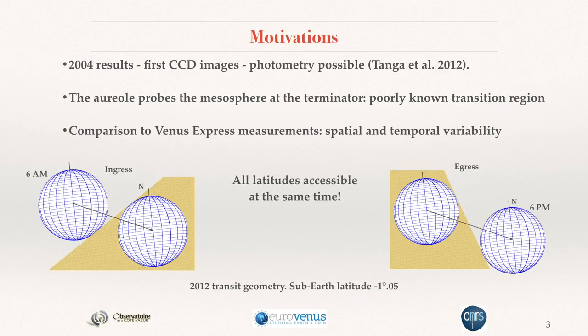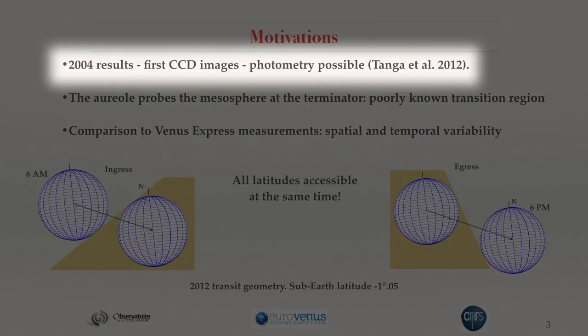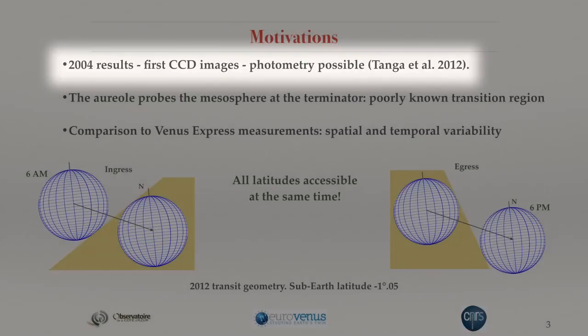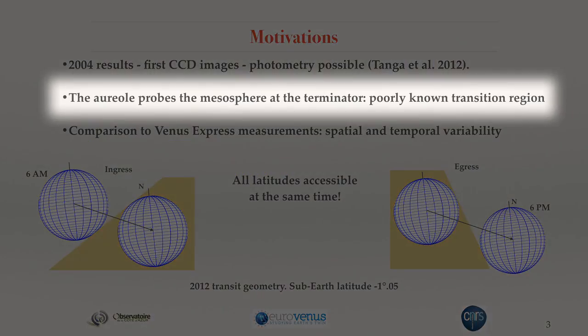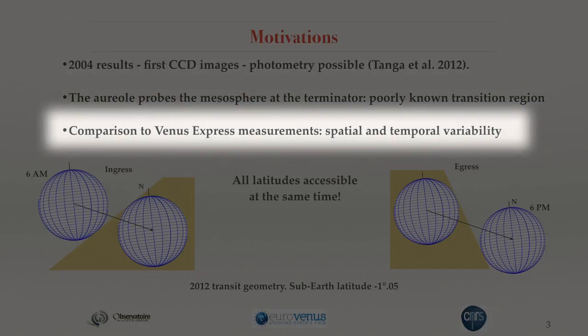Our main motivations are provided by the first attempts we made using data of the Venus transit in 2004. This was basically the first time the aural of Venus was observed with modern techniques — a kind of rediscovery of the aural with real quantitative measurements. We were able to show that the aural is due to refraction produced in the mesosphere of the planet, in a region where transitions occur between solar and zonal circulation — a very interesting and puzzling region where Venus shows observed variability in space and time.